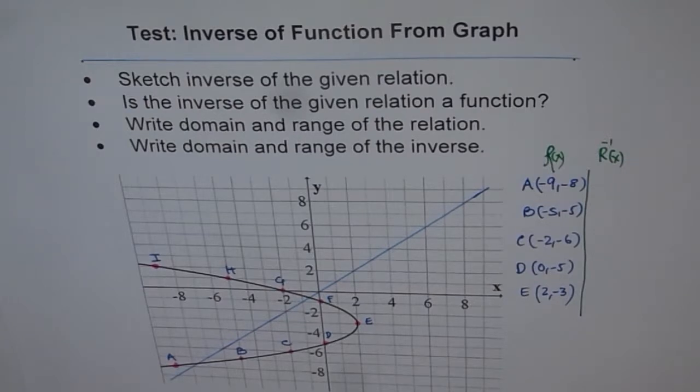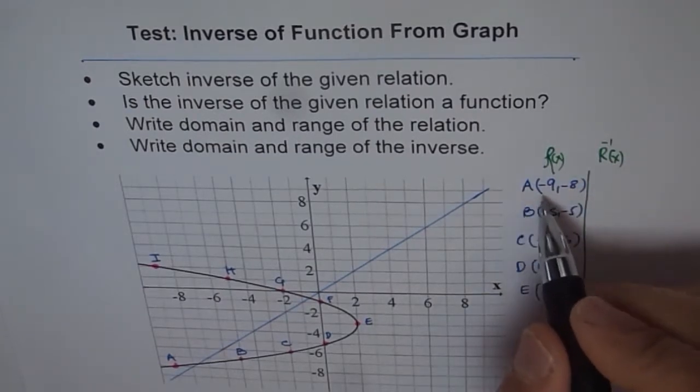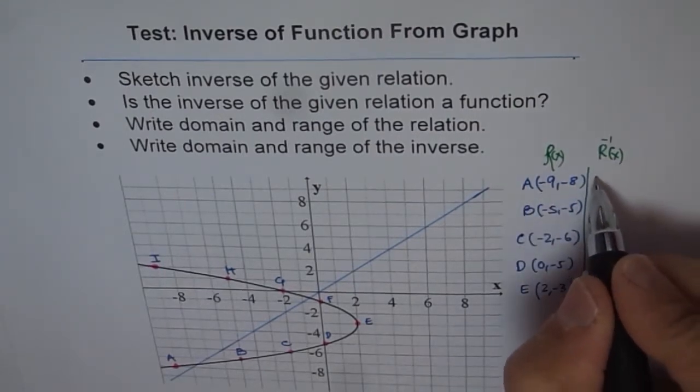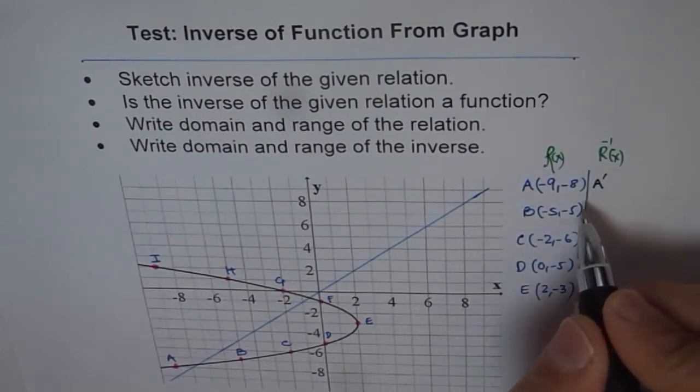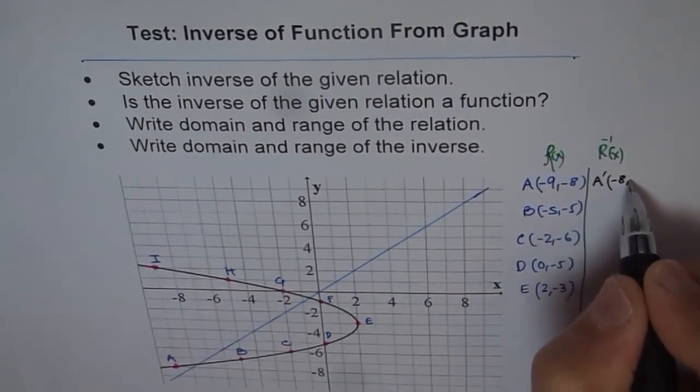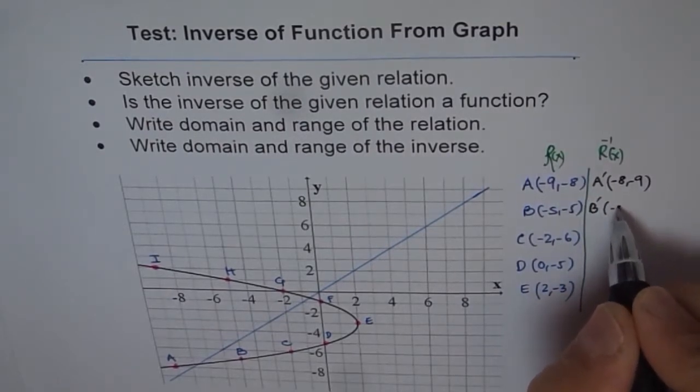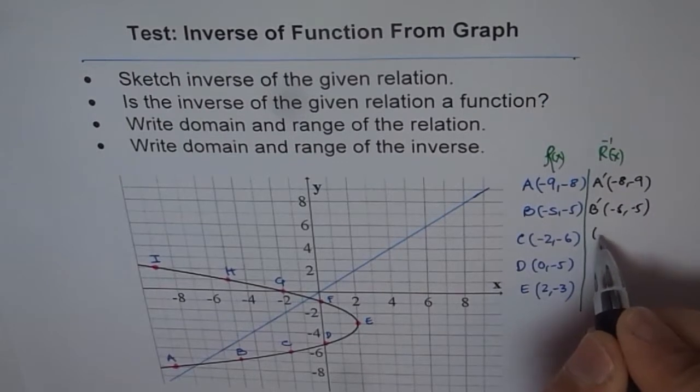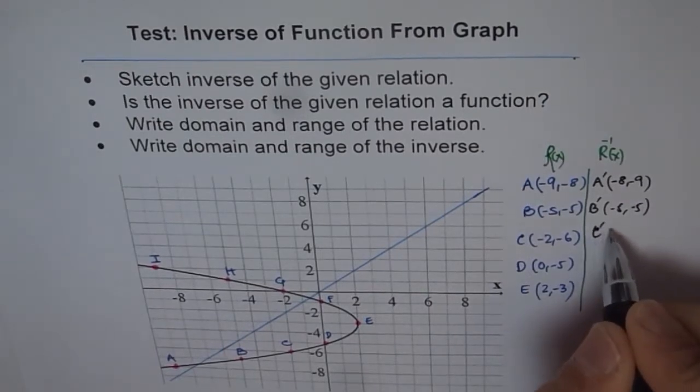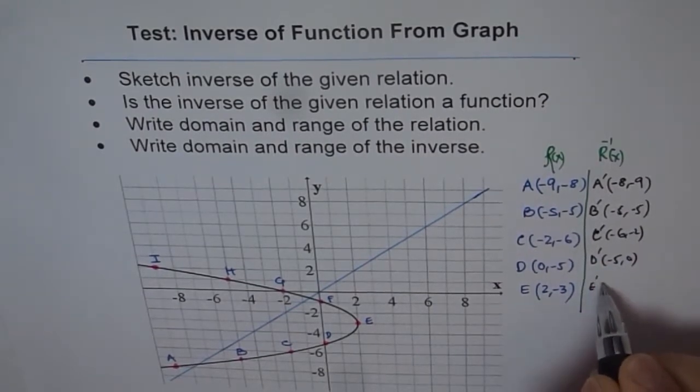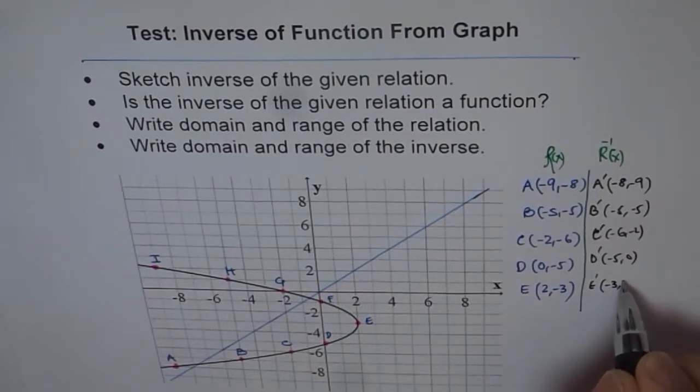And then you can write down the set of points which will be on the inverse of this relation. So it will be A dash, make it A dash. And then you can write this as minus 9, minus 8. Just interchange. B is minus 5, minus 5. C dash is minus 6, minus 2. D dash will be minus 5, 0. And E dash will be minus 3, 2.